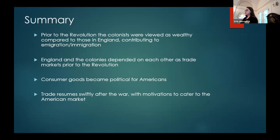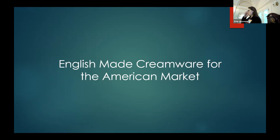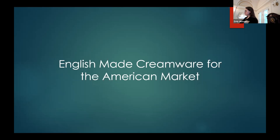Trade resumed swiftly after the war, with motivations to cater to the American market. Economic history provides context showing the power dynamics between the colonies and England while the objects were being produced — explaining why these objects came to be. Looking now at English-made creamware for the American market, there are many examples of British-made creamware from the latter half of the 18th century. The creamware most commonly originates from Liverpool, a major port in the north, and from Staffordshire, just southeast of Liverpool.